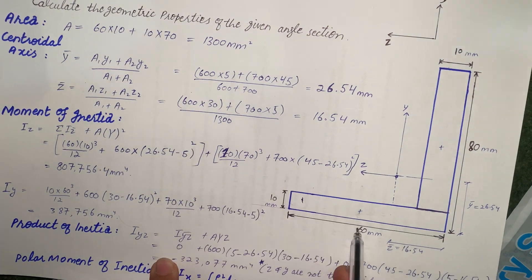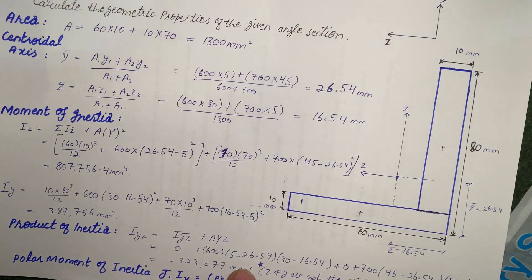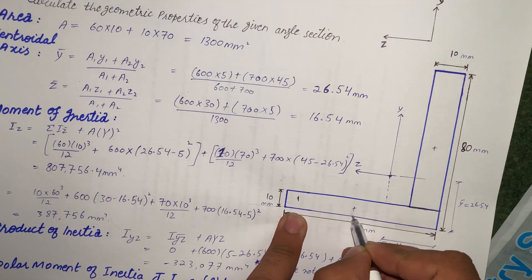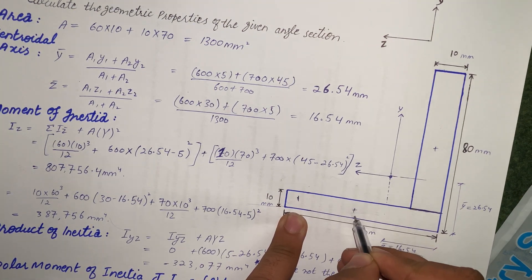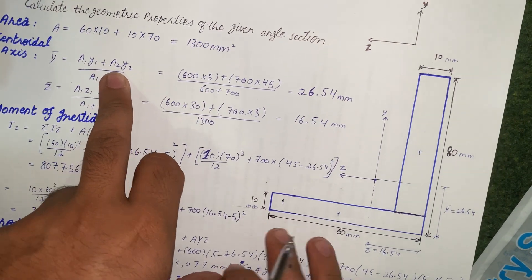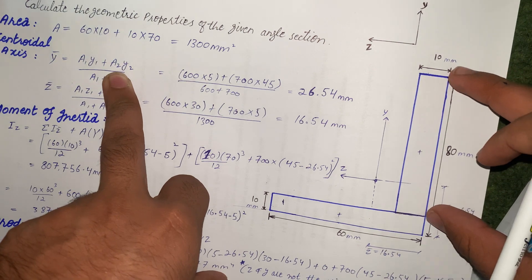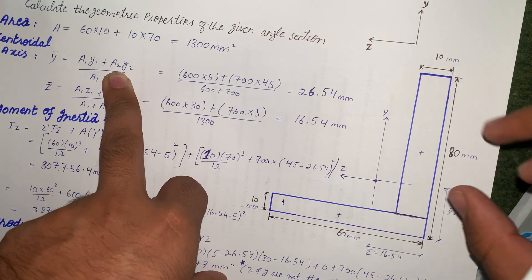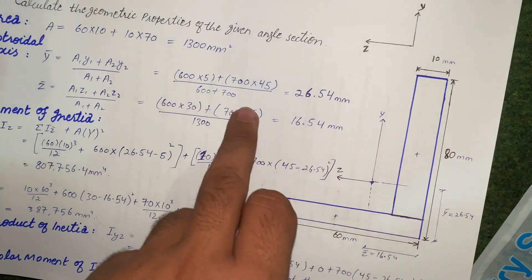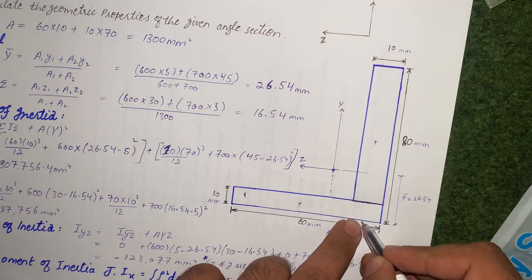For rectangle 1, area A₁ = 60×10 = 600 mm². The distance y₁ is from the reference axis to the centroid of rectangle 1, which is half of 10, so y₁ = 5 mm. For rectangle 2, its height is 70 mm (not 80, as 10 is subtracted), so A₂ = 10×70 = 700 mm².